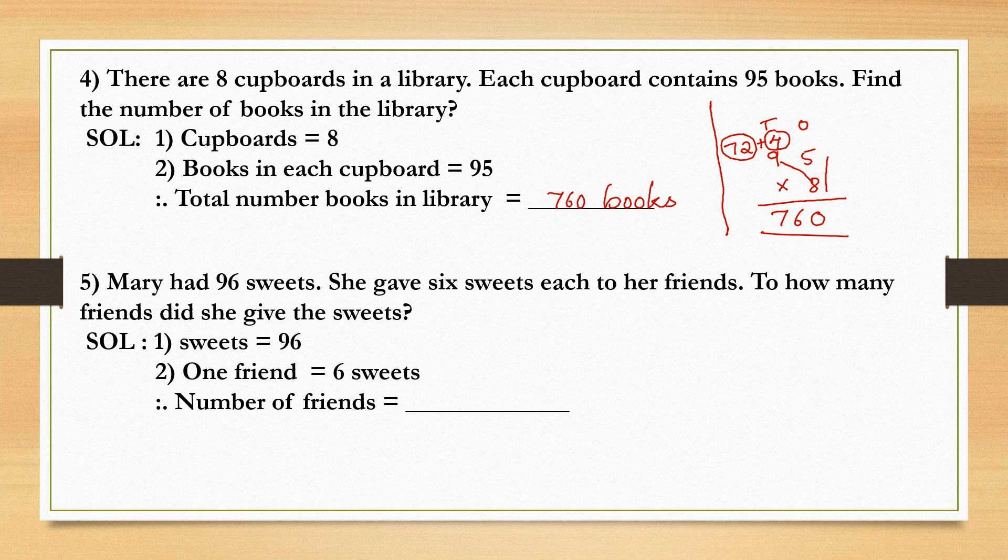Let's come to the fifth question. Mary had 96 sweets. She gave six sweets each to her friends. To how many friends did she give the sweets? Solution number one: sweets equal to 96.